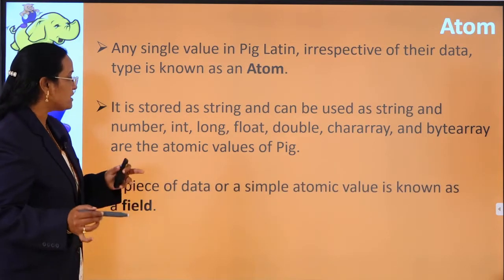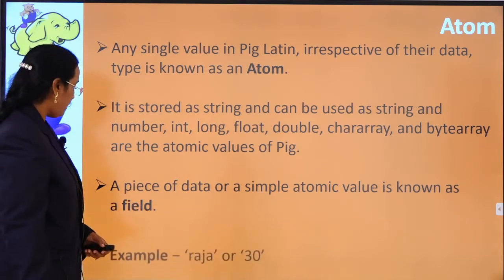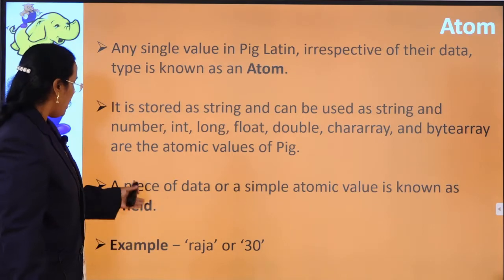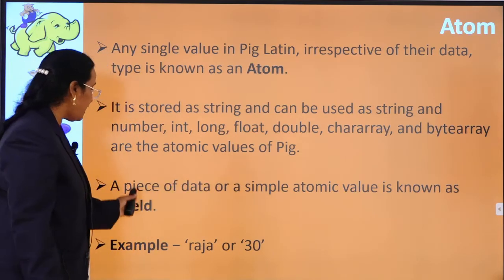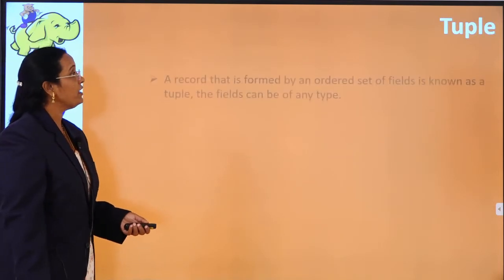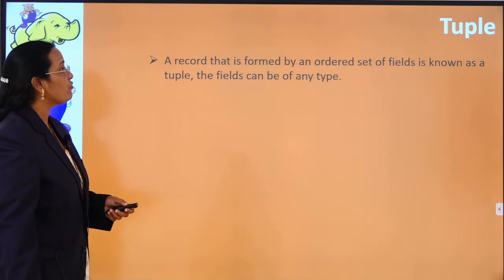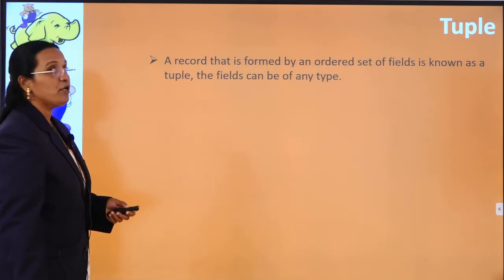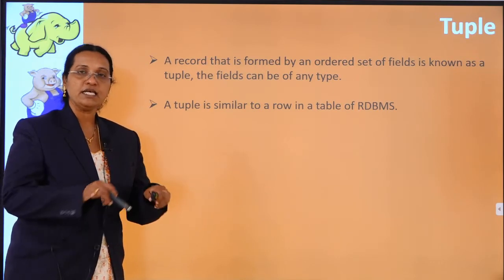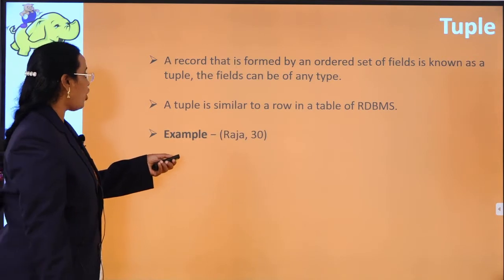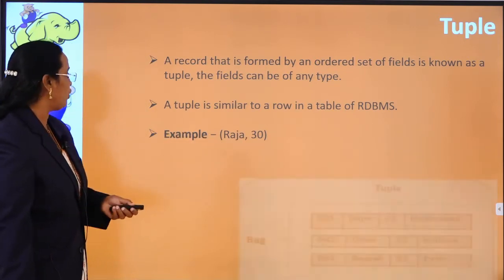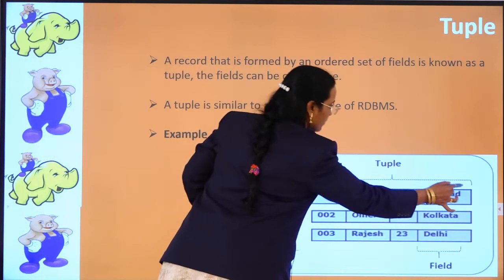A piece of data or a simple atomic value is known as a field. For example, 'raja' or '30' are called atoms. A record formed by an ordered set of fields is known as a tuple, and the fields can be of any type. A tuple is similar to a row in RDBMS. For example, (raja, 30) is one tuple, where 'raja' is one atom and '30' is another atom. A single tuple can contain multiple fields of different data types.